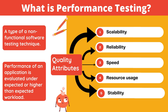Scalability determines the maximum user load the software application can handle. Reliability is measured in terms of performance of the application under different environments and conditions. Speed determines how quickly the application responds. Resource utilization tracks how busy various system resources are when running a performance test. Stability determines if the application is stable under varying loads.